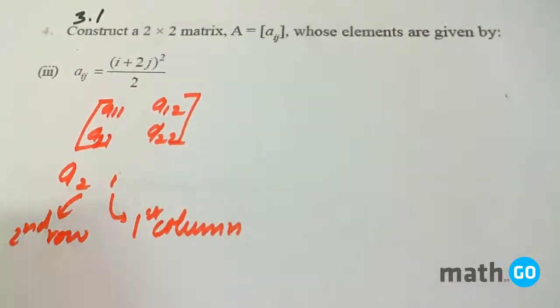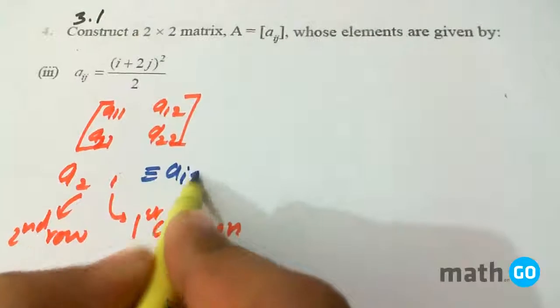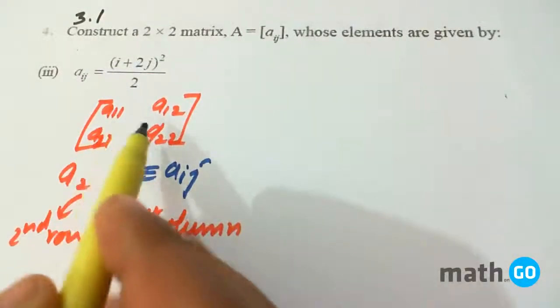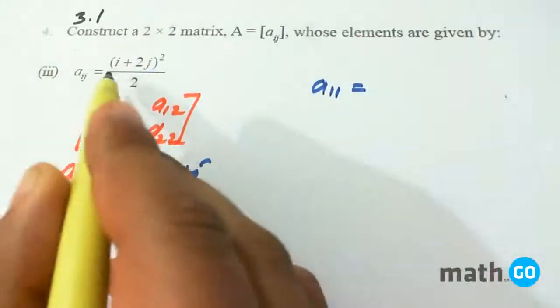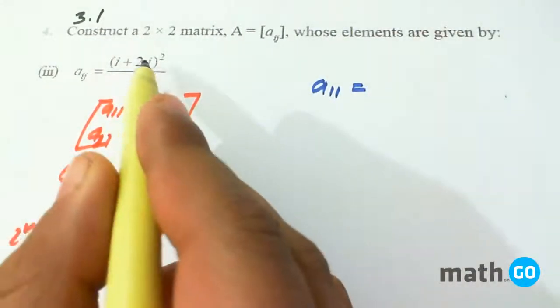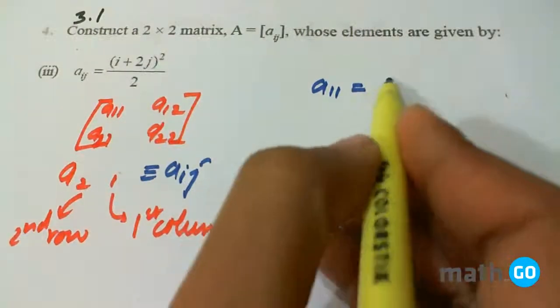So now simple thing has to be done. We put i and j values and we get the value. So for A11 we get 1 plus 2, that is 3, 3 squared.